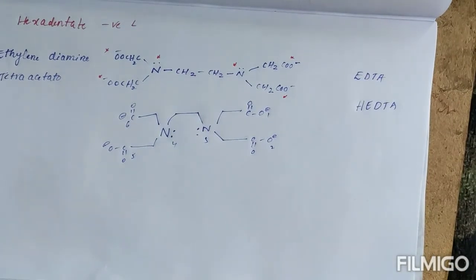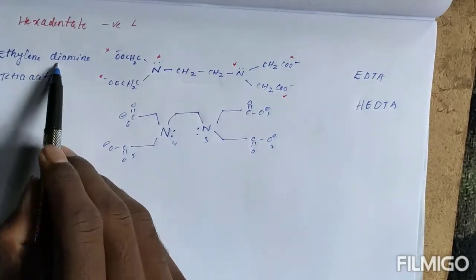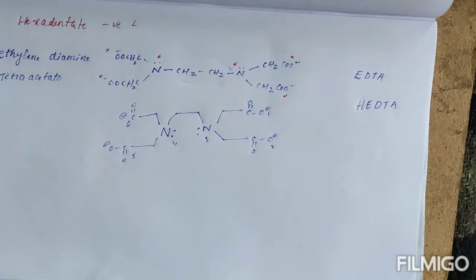So we can see that ethylene, this is ethylenediamine, diamine, right? Tetraaceto: one, two, three, four tetraaceto.